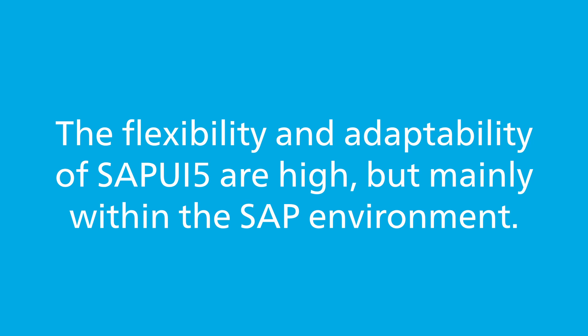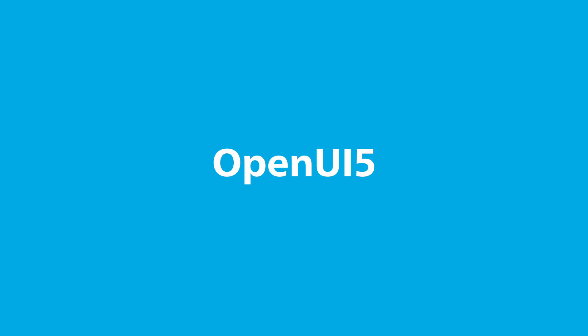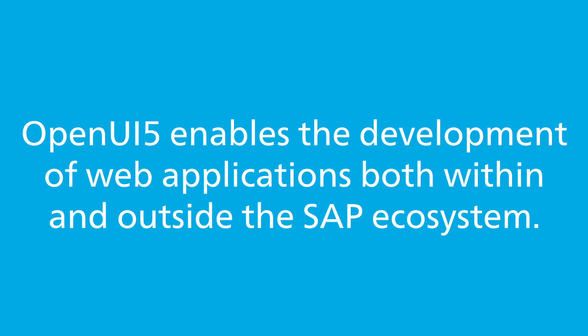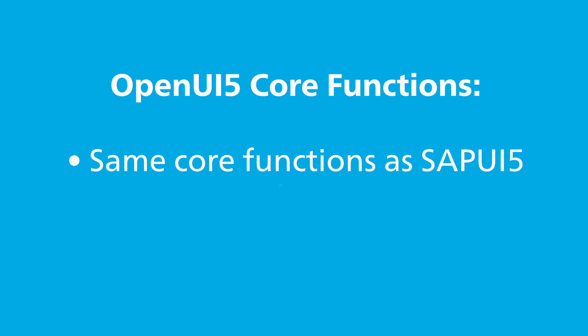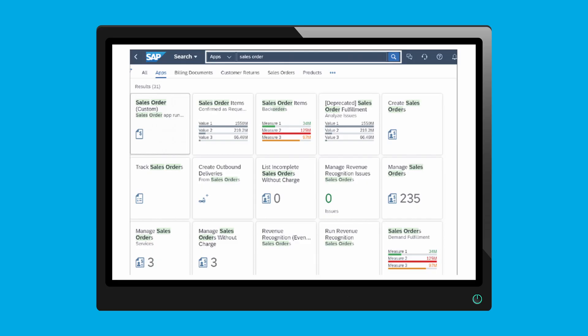The flexibility and adaptability of SAPUI5 are high, but mainly within the SAP environment. OpenUI5 is the open-source version of SAPUI5 and offers the same core functionality, including an extensive UI component library, data binding, internationalization, and theming. It's released under the Apache 2.0 license and supported by the community. OpenUI5 enables development of web applications both within and outside the SAP ecosystem. It offers the same UI component library and data binding functions, with the open-source community contributing to further development. It's suitable for a wide range of web development projects and offers a high degree of flexibility that can also be used outside the SAP environment.